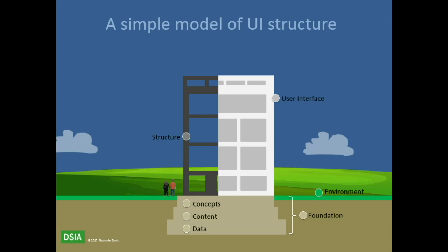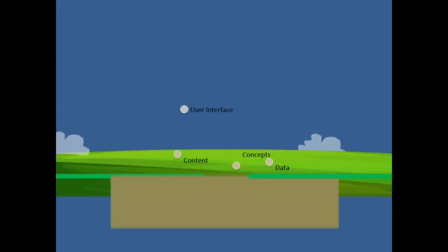From any strategic or architectural intent, we can begin to model the user interface. And one more important point: the idea of information architecture is to actually connect all of those — concepts, content, and data — together. It's not just modeling, but showing how all of those actually connect.